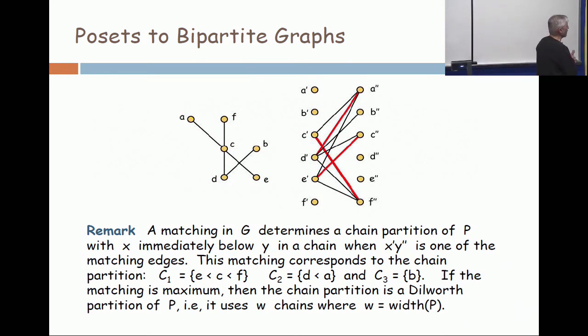So, look at the matching edges. D', A', that means I'm going to have D immediately under A in a chain. I did that in chain two. Then, I look at the others. I see an E', C', that means I'm going to have E immediately under C in a chain.